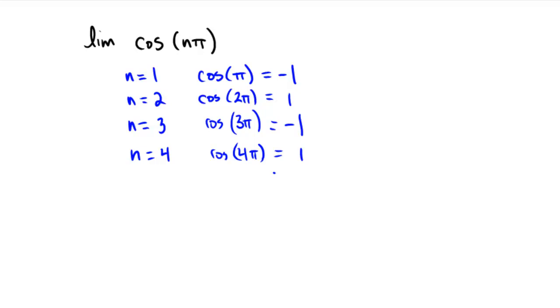So what we're seeing here is that this particular sequence is going to be oscillating between 1 and negative 1, and therefore it's never actually going to settle down towards a limit. It's going to keep bouncing back and forth.